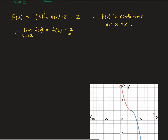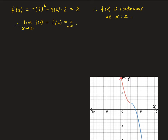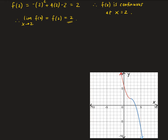Here's what it looks like. For the top part, we had x squared minus 4x plus 6 when x is less than 2. And for x greater than or equal to 2, we had minus x squared plus 4x minus 2. You can see it's continuous at 2, and not only that, it's continuous everywhere.